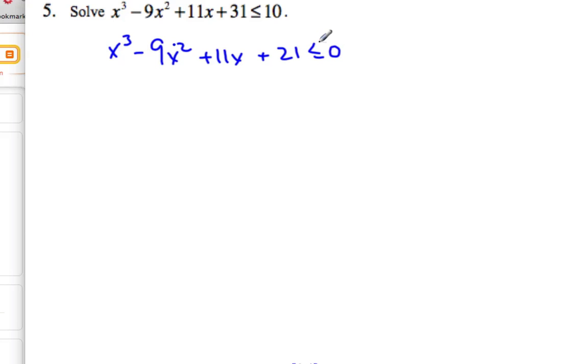Now, I'm really not going to worry about my sign here at this particular time. I'm going to look to factor this scenario. Well, if I look to grouping, it doesn't group. I can see that quickly. So let's look at factors of 21, which are 1, 3, 7, and 21.